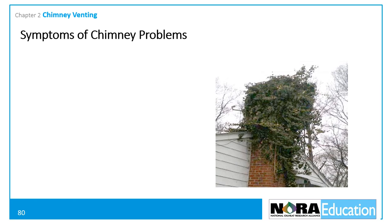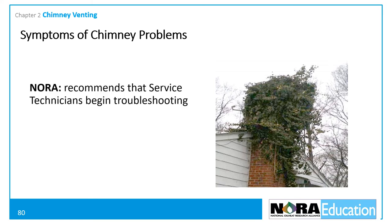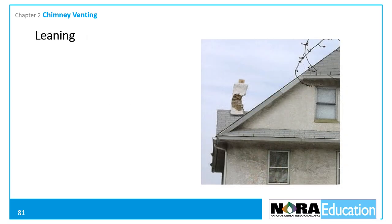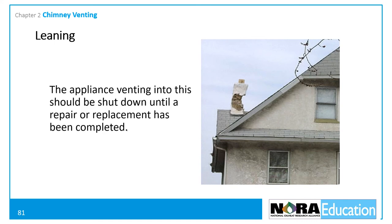There are a number of tell-tale signs that indicate a chimney is in need of repair or relining. NORA recommends that service technicians begin troubleshooting before they enter a customer's home or business. As a technician approaches a job site, he or she should look at the chimney for any indications of a problem. Once inside, the inspection should continue. Among the more common indications is leaning — a chimney that is clearly leaning is in need of major repair, and the appliance venting into it should be shut down until repair or replacement is completed.